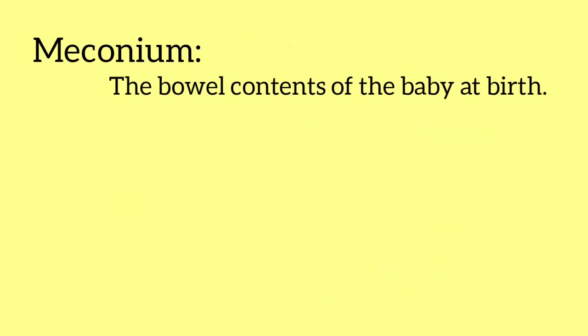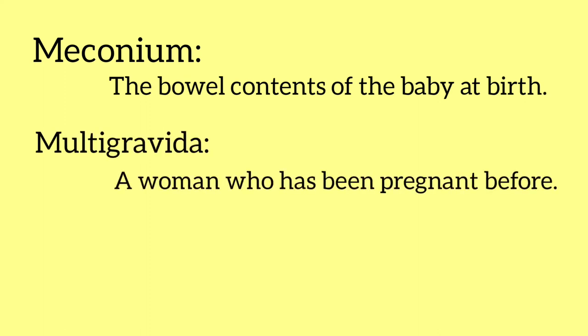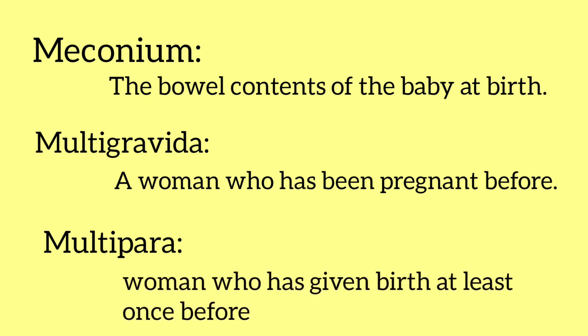Meconium is the bowel content of the baby at birth. Multigravida refers to a woman who has been pregnant before. Multipara means a woman who has given birth at least once before.